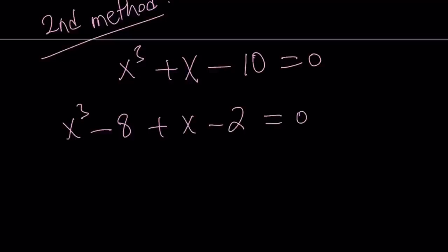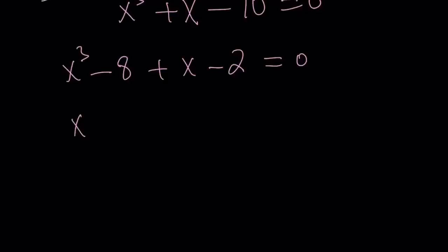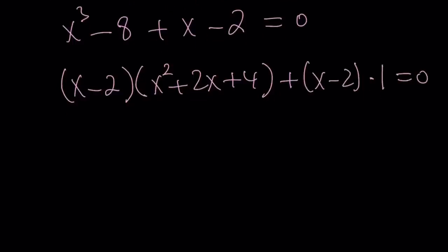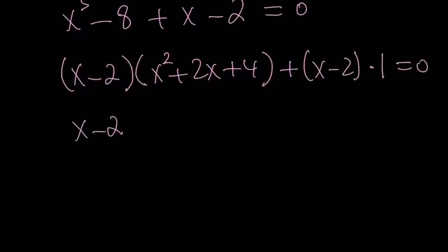Why did I split up the negative 10 like that? Because when I do, this expression becomes factorable by grouping. Because x³ - 8 is a difference of cubes, which can be written as (x - 2)(x² + 2x + 4). And x - 2 can be written as (x - 2) times 1. Let's go ahead and take out (x - 2), which tells us x = 2 is one of the solutions. And the other factor is going to be x² + 2x + 5.